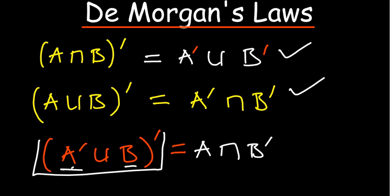The key thing about De Morgan's law is that you need to understand it under set theory. They can ask you to state and of course prove it. I'll explain how we get to confirm this. For the sake of proving, we can look at one example.